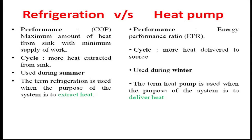The target of refrigeration is to reduce temperature, so we have the evaporator as its objective. In the case of a heat pump, the target is to increase temperature, so our target component is the condenser. This is the basic and most important defining difference between heat pump and refrigeration system.